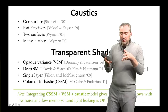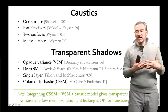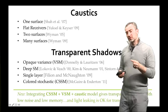Variance shadow maps avoid the expensive filtering step but have light leaks. By combining the two methods together, we get the performance and the quality. We still have a few light leaks, but they only occur inside transparent surfaces.